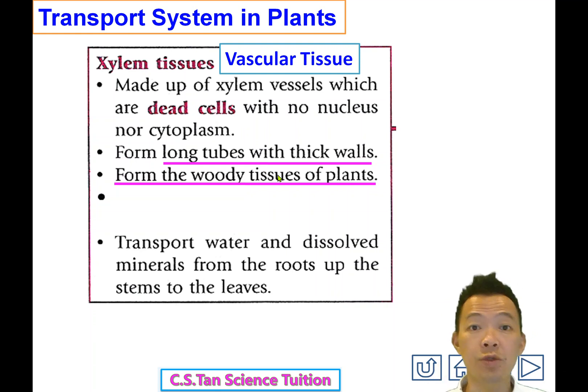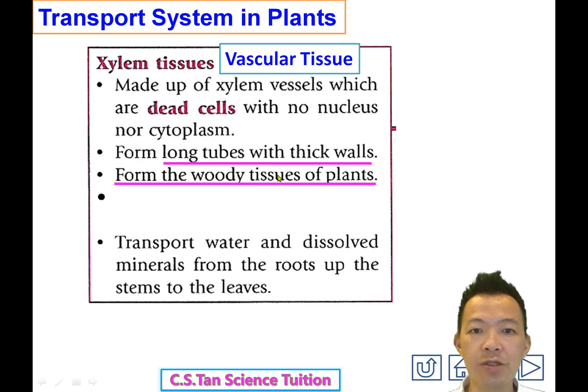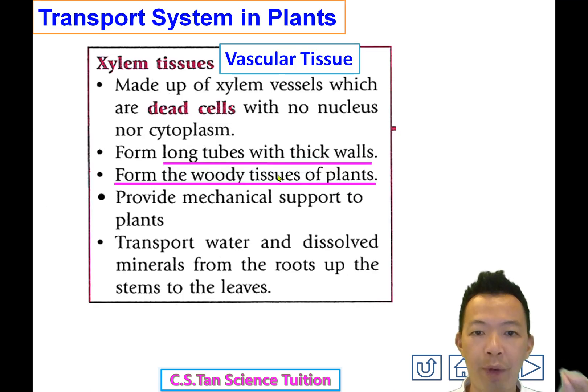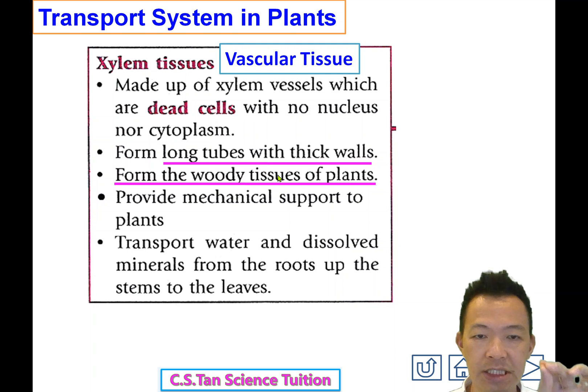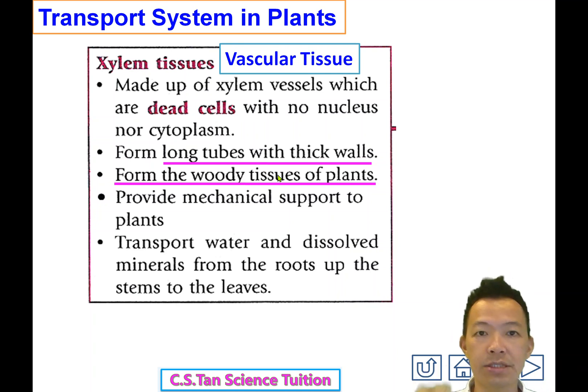So xylem tissue, besides transporting water and minerals 除了送水跟礦物質以外, can also provide mechanical support to the plant 支撐植物.